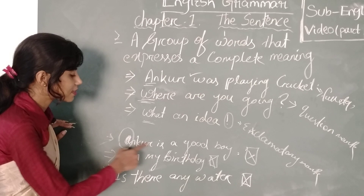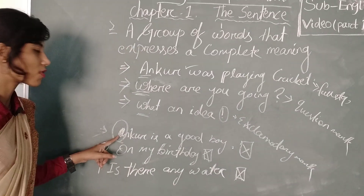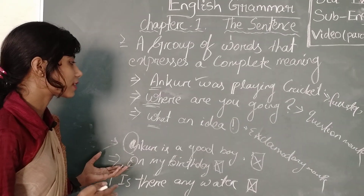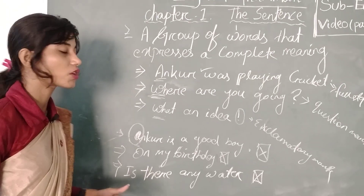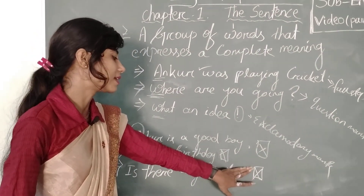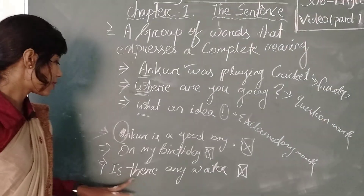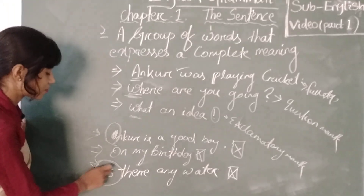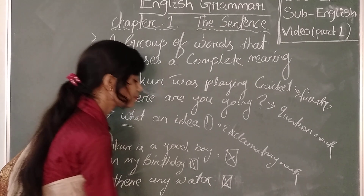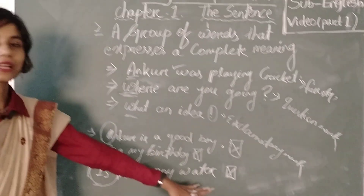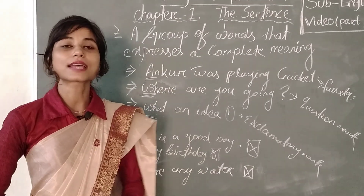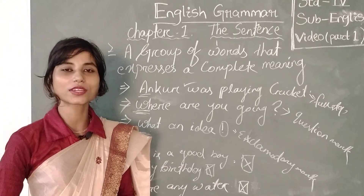In the below sentences, 'Ankur is playing' is not correct because the sentence is incomplete. 'On my birthday' is not conveying any complete meaning — it is not containing any verb or object part. 'Is there any water?' — here I had omitted the sign. The correct sign to use here is a question mark, because the sentence starts with the auxiliary verb 'is.' Without the sign and without the capital letter, you cannot call it a sentence. So that is enough for today. We will meet in the next class with some questions and answers on Chapter 1. Till then, keep learning. Have a good day!